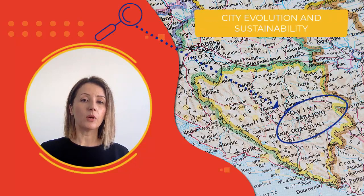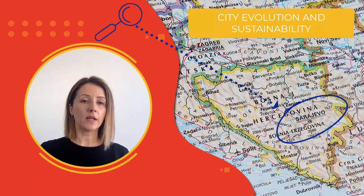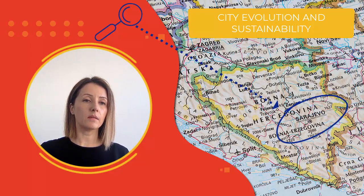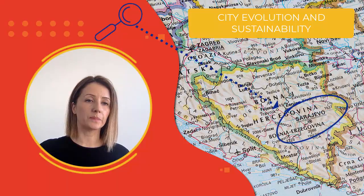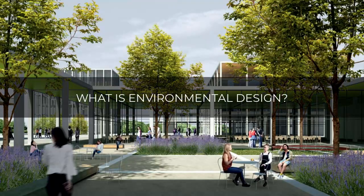On the example of the city of Sarajevo, various development layers can be recognized related to the population, environment, technology and social organization.